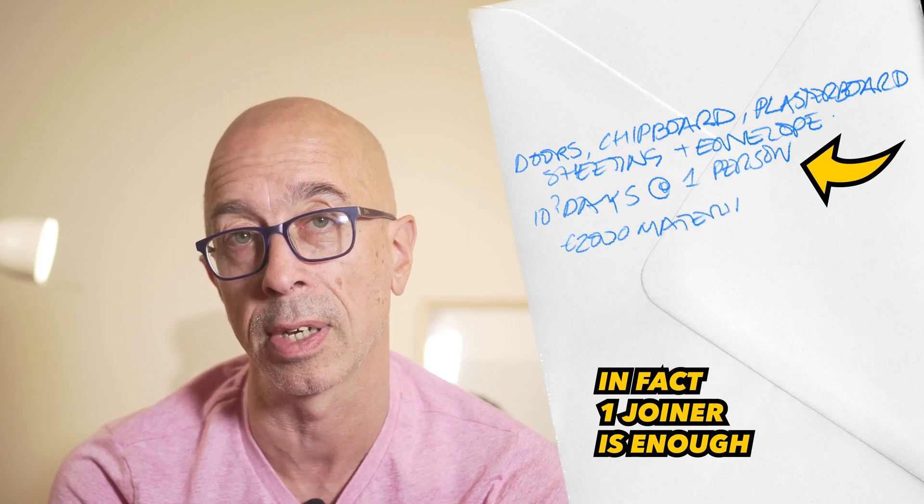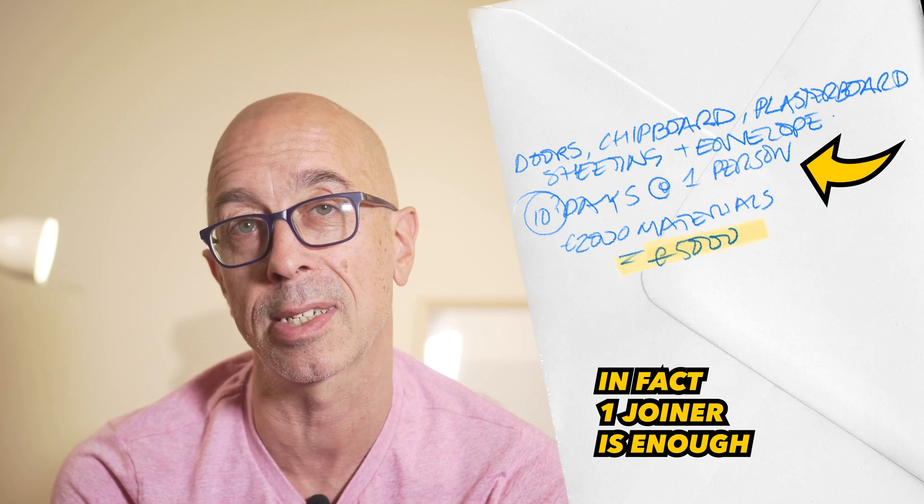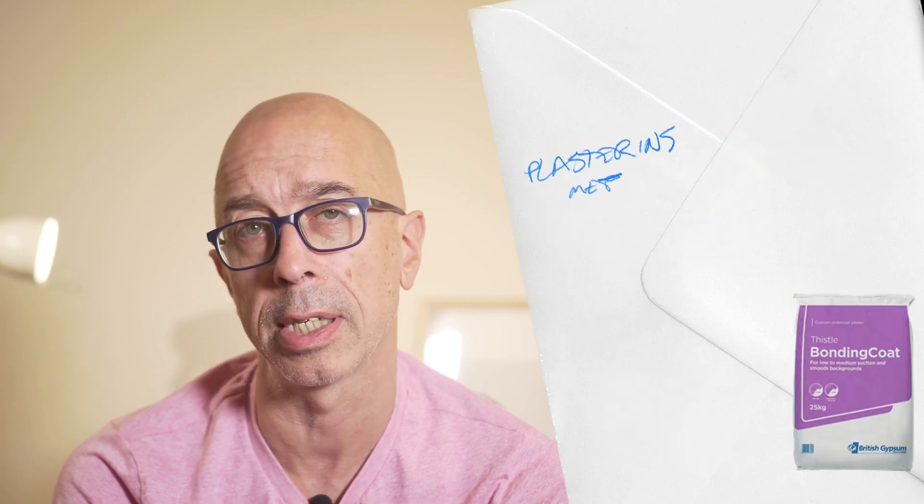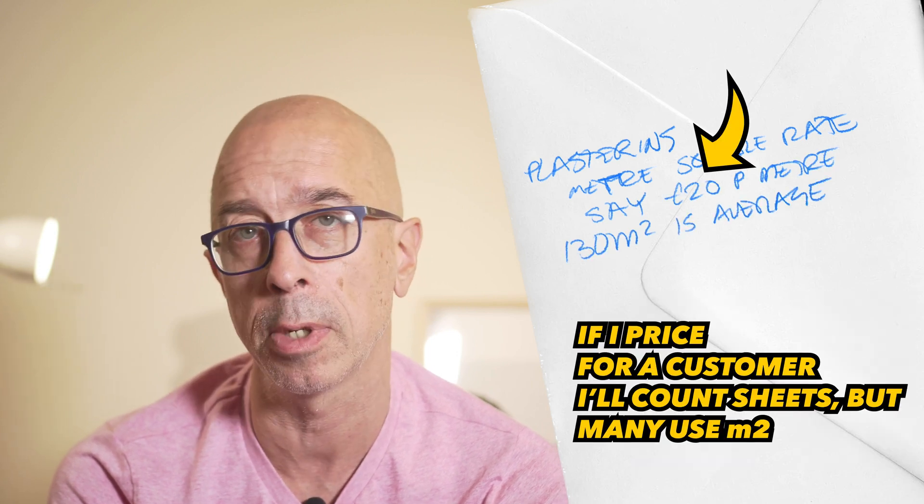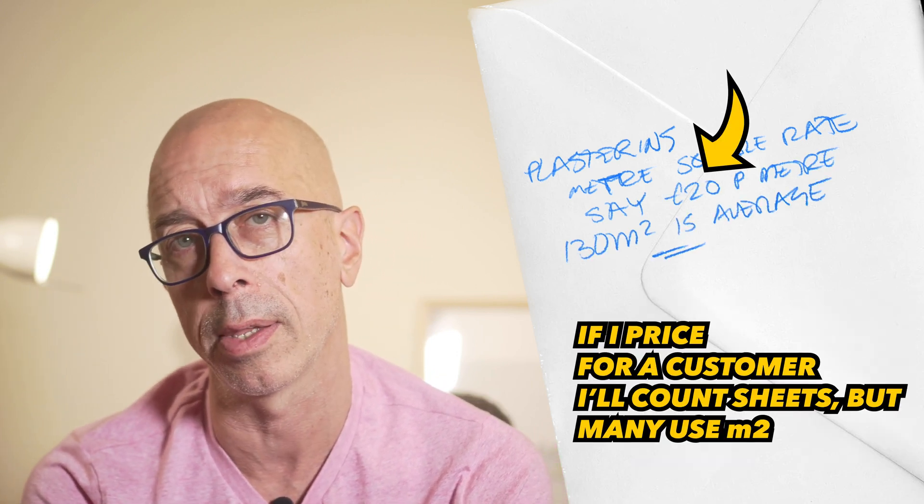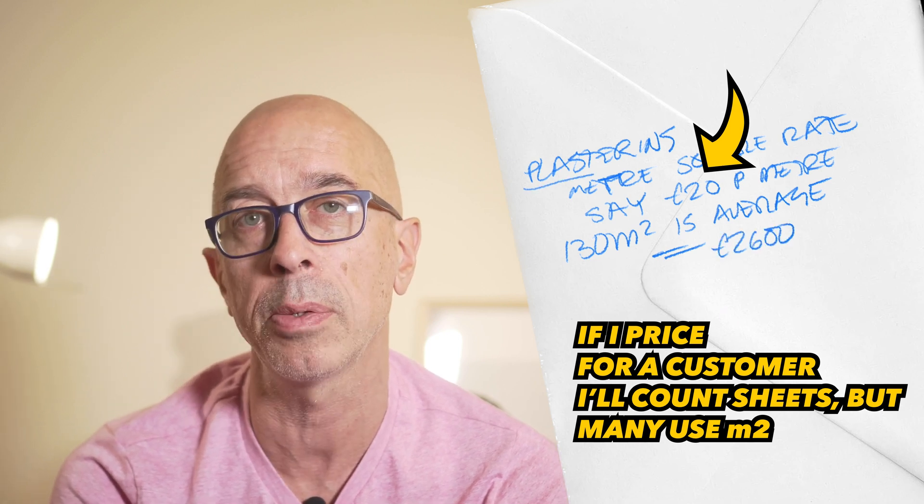Time for the plasterers to come in and skim with bonding plaster into the junction with the existing house and skim elsewhere. I would imagine that will be this much, based usually on either a square meter rate or they count the number of sheets of plasterboard. You'll need to allow a week or two depending on the time of year to dry it out.